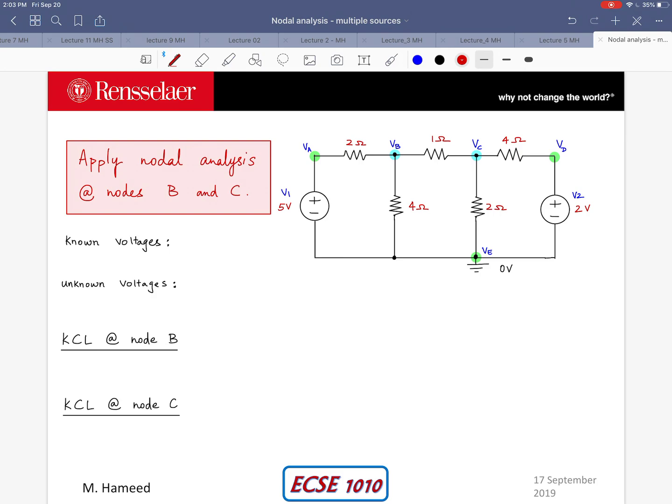For known voltages we have nodes VA and VD as our two known voltages. VA simply equals V1 simply equals 5 volts. In the same manner VD equals V2 equals 2 volts. For our unknown voltages we have two of them at nodes B and C, so VB and VC are our two unknowns.